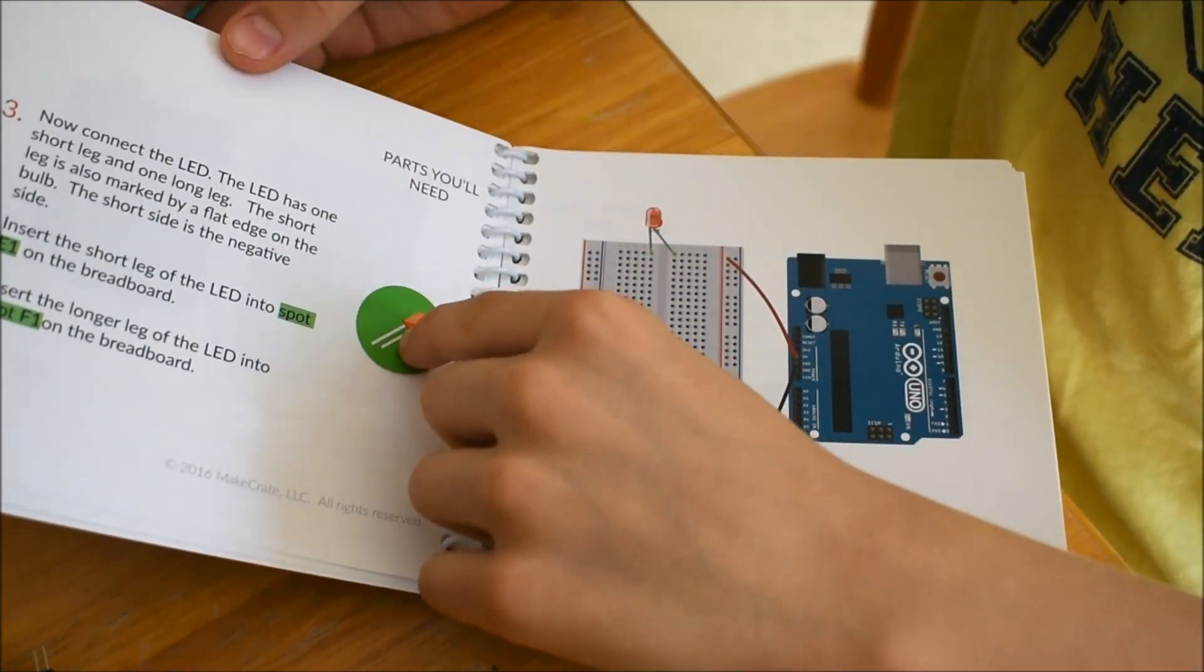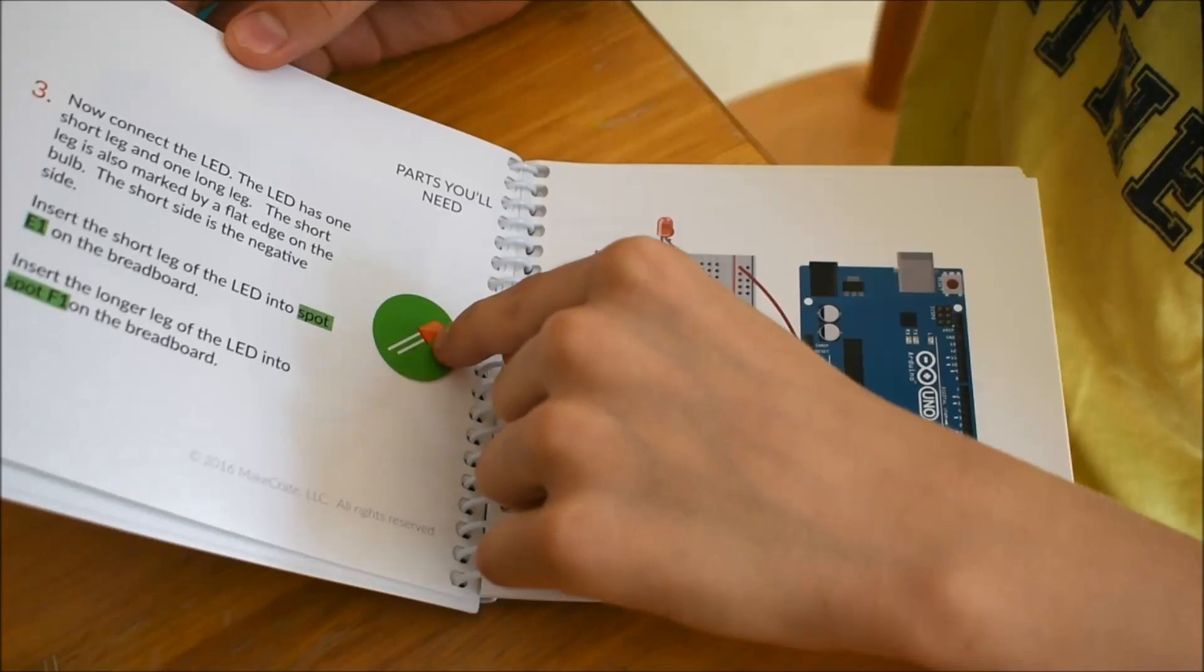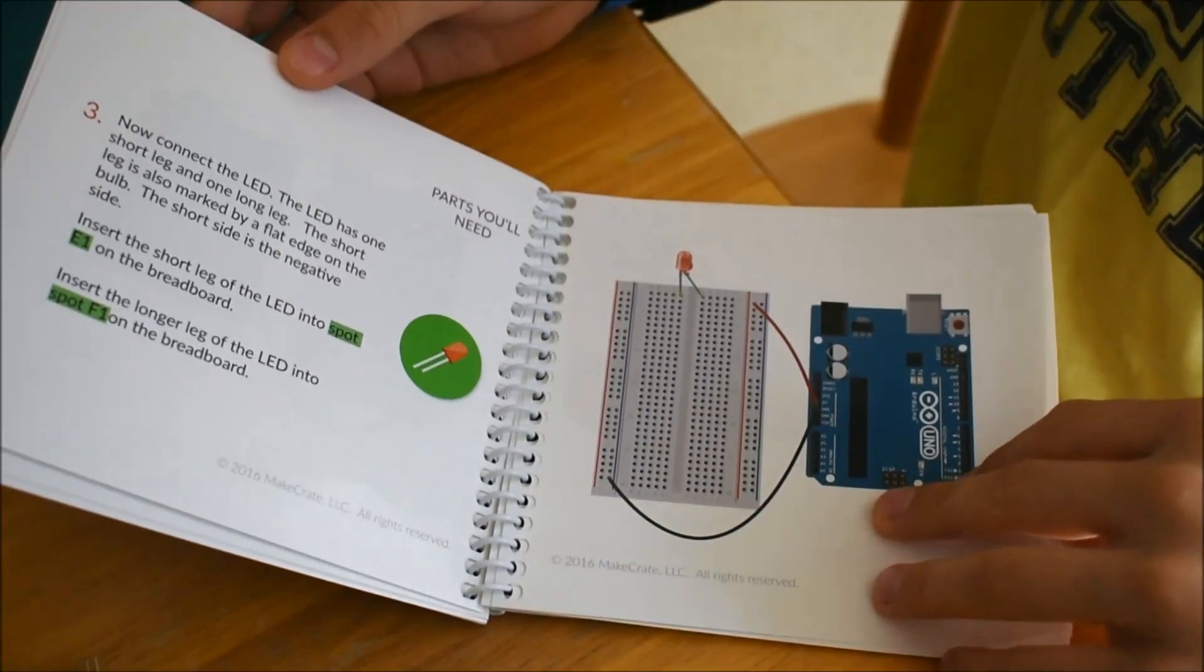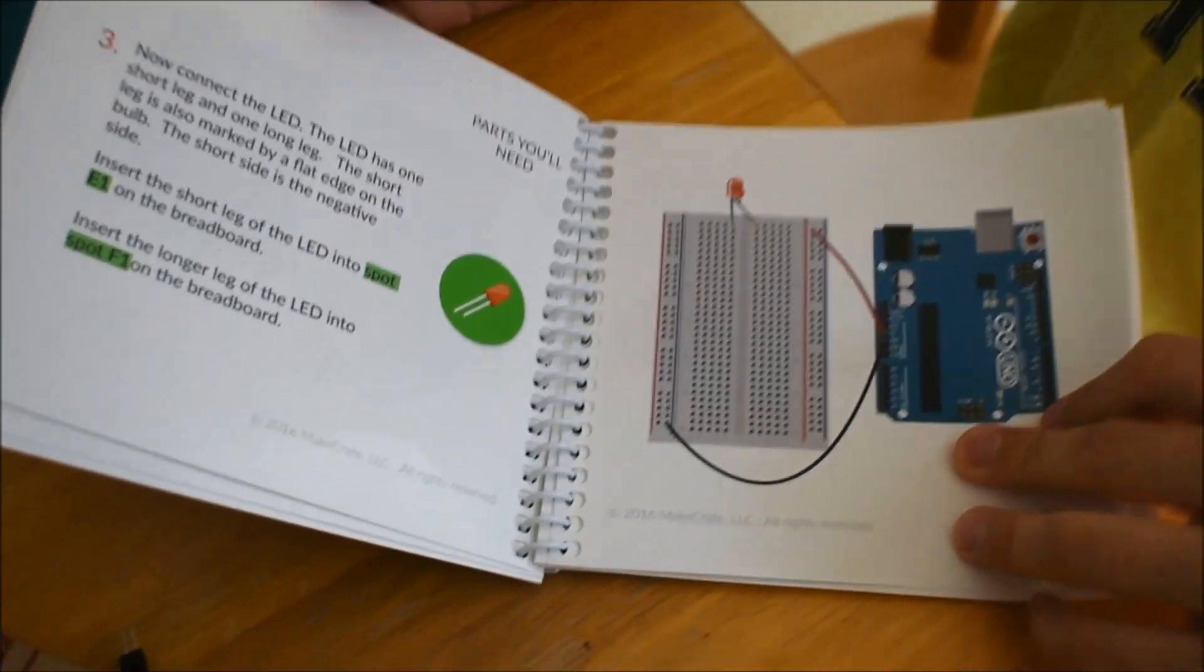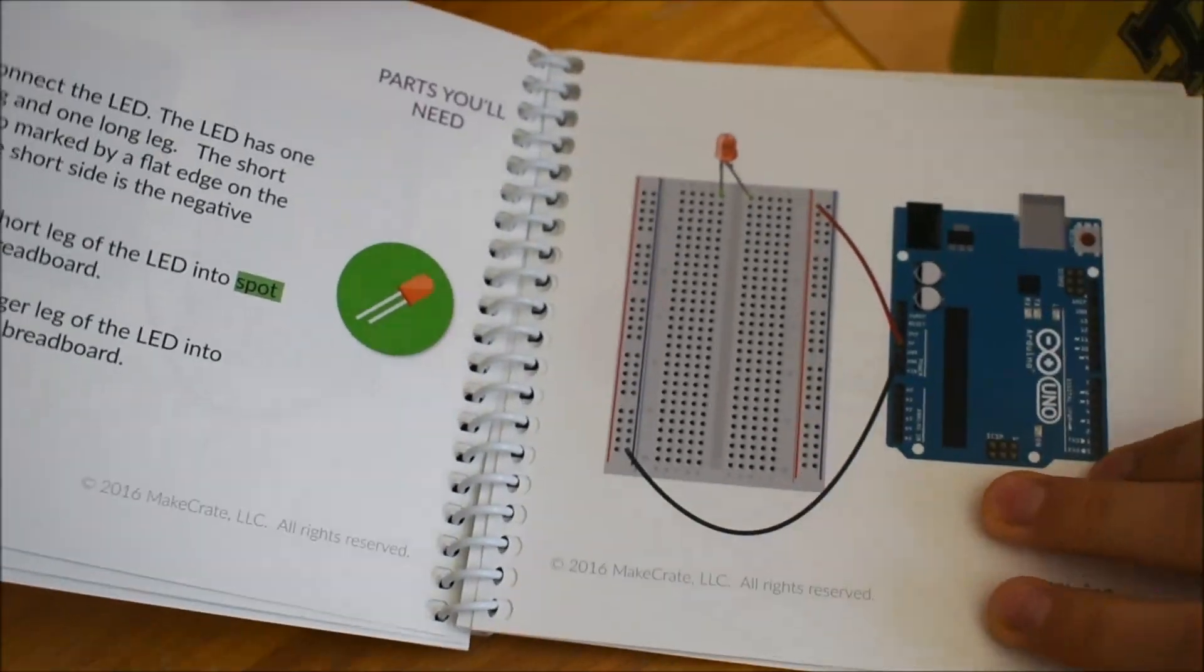And as you can see it shows the LEDs as well. Austin, did you find the instructions were easy to follow? Very easy. Okay, so they were very simple.